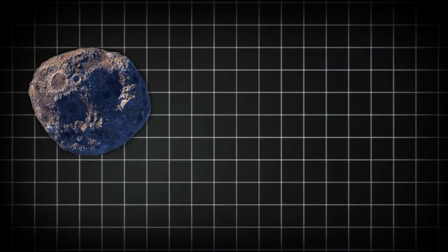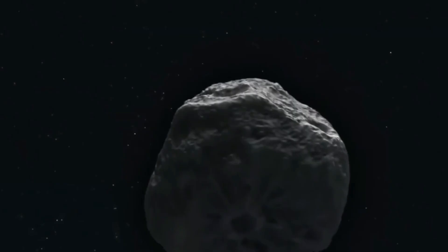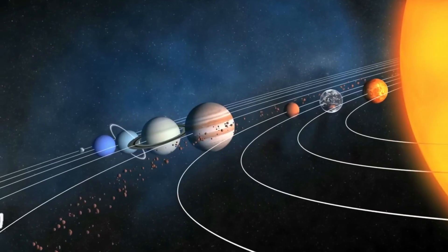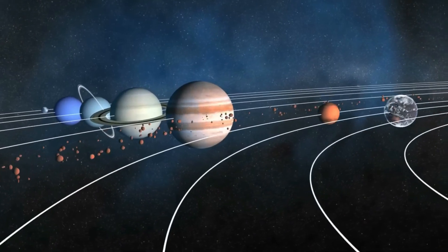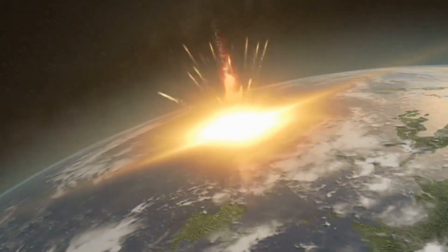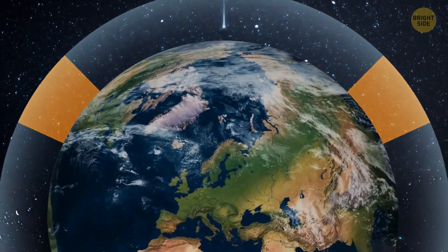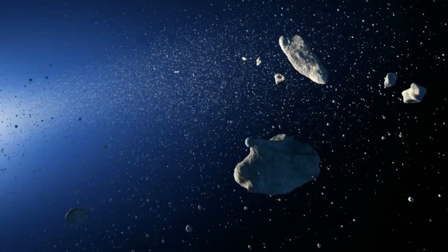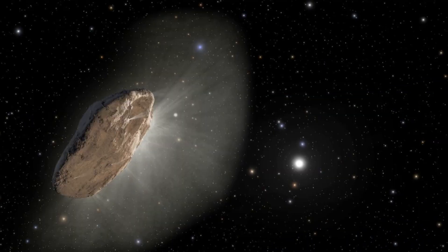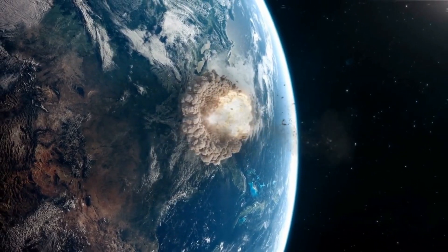Real world example: The Chelyabinsk meteor serves as a reminder of how even small space objects can cause significant damage. In 2013, a meteor exploded over Russia, injuring over 1,500 people and causing extensive property damage. While the Chelyabinsk meteor was much smaller than the objects we usually associate with catastrophic impacts, it highlighted the importance of tracking small objects that might be harder to detect. Dark comets, especially those with smaller inner orbits, pose a similar challenge. While they may not always be large enough to destroy cities, their unpredictable nature could still lead to significant consequences.